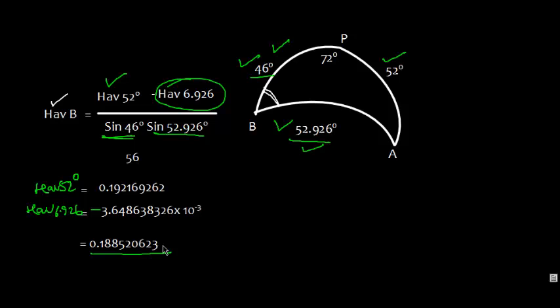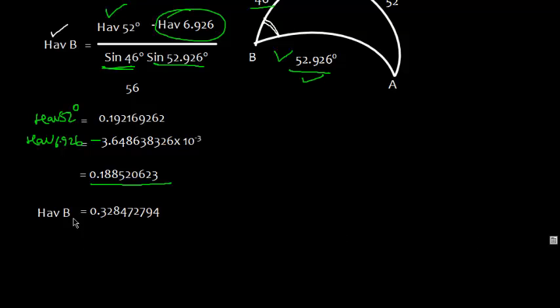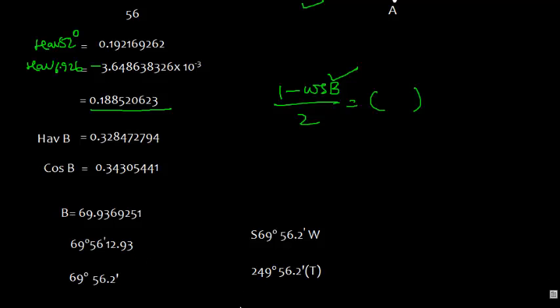First, hav 52, then hav of 6.926. We subtract, so we got this value. So hav of B is this one. Same way you can write like this: 1 minus cos B by 2 is equal to whatever this product. So find the value of cos B, and once it is obtained, the angle B is 69.9 degrees, or we can write 69 degrees 56.2.